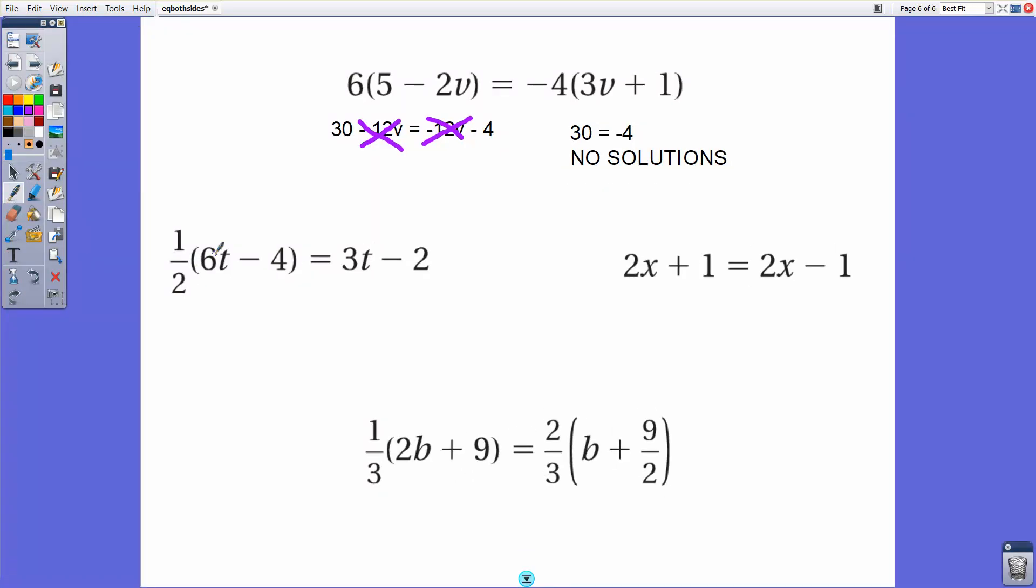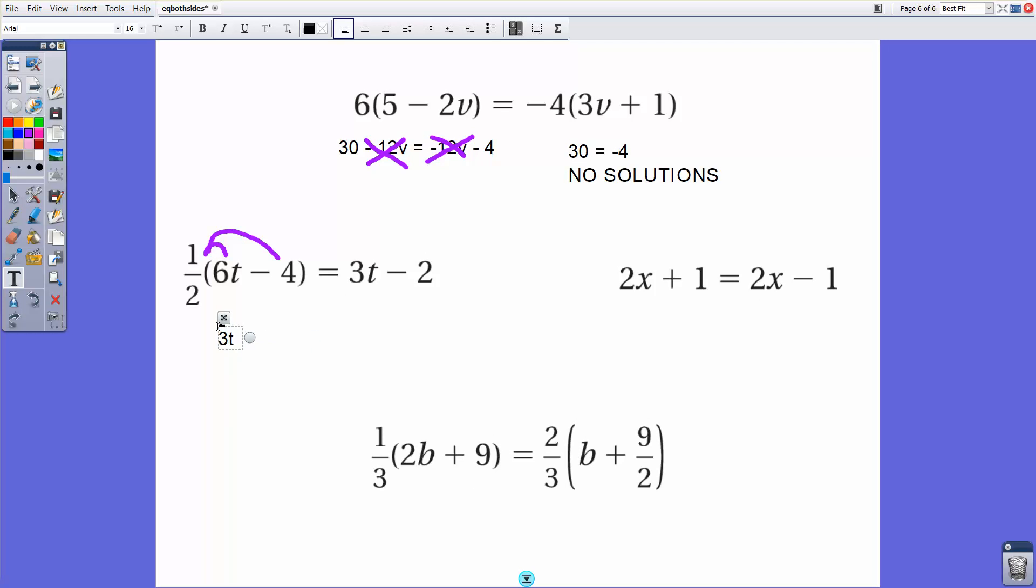We have one half of 6t minus 4 equals 3t minus 2. Well, if I distribute, get my t outside of this grouping symbol, I will see that one half of 6 is 3. 3t minus 2 equals 3t minus 2. Now look at this. This case here, I've got the exact same thing on both sides.